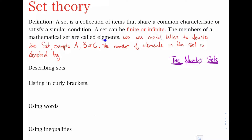The members of a mathematical set are called elements. We use capital letters to denote sets — for example, capital A could be a set, capital B could also be a set, or capital C. Any capital letter from the alphabet could be a set. The number of elements in a set is denoted by n(A), which reads 'the number of elements in A', or n(B), or n(C). Note that A, B, and C have to be finite because we want to count up those elements.